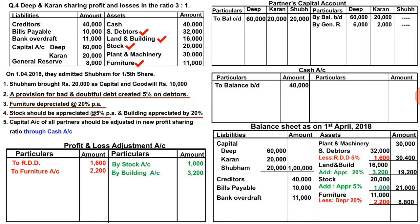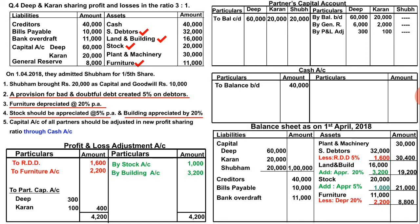Now I can easily find the profit or loss. Looking at the profit and loss adjustment account, the credit side total is heavier at 4,200. I will close the credit side and transfer to debit side. Deducting losses of 1,600 and 2,200 from 4,200 gives a profit of 400. This 400 will be distributed between Deep and Karan in old ratio 3:1 — Deep gets 300 and Karan gets 100. This profit is shifted to the credit side of the partners' capital accounts.